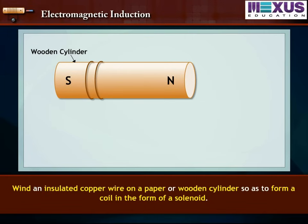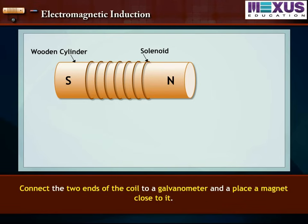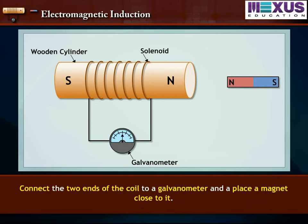Bind an insulated copper wire on a paper or wooden cylinder so as to form a coil in the form of a solenoid. Connect the two ends of the coil to a galvanometer and place a magnet close to it.